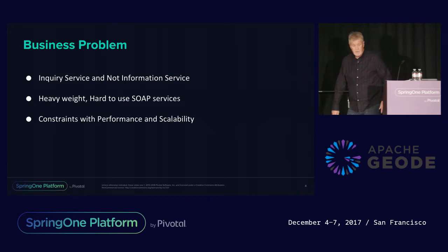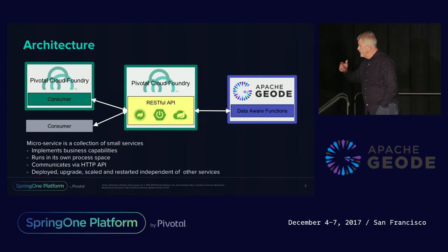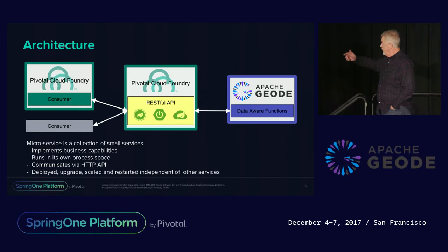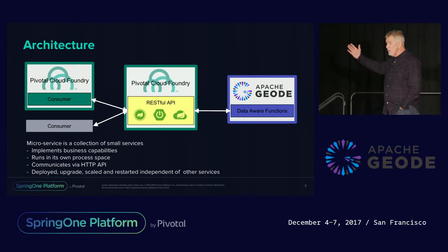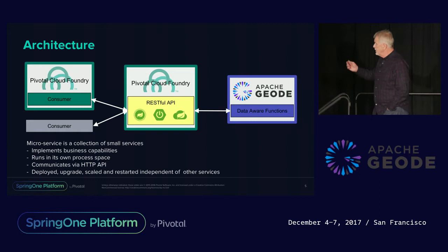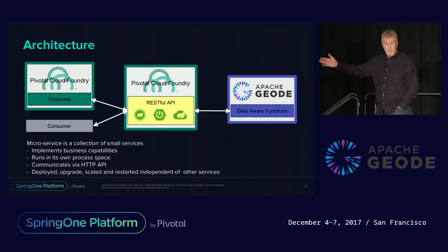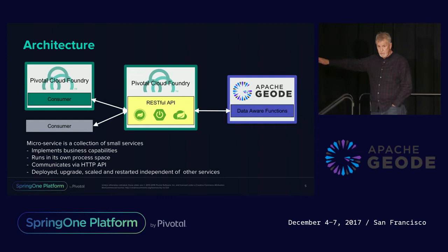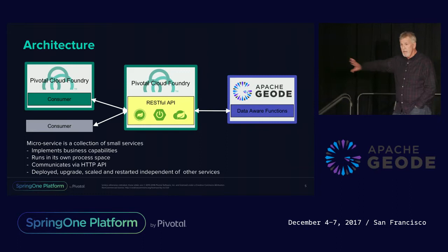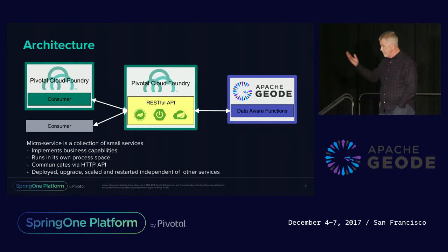What we decided to do is put in a RESTful API service using Gemfire as our data store, using what we call data-aware functions. We also had different kinds of consumers — those already in PCF, mobile applications, and traditional consumers. A microservice is a collection of small services that implements business capabilities, runs in its own process space, exposes an HTTP interface, and can be deployed, upgraded, scaled, modified, and restarted independently. Those were the driving factors as we implemented this service.